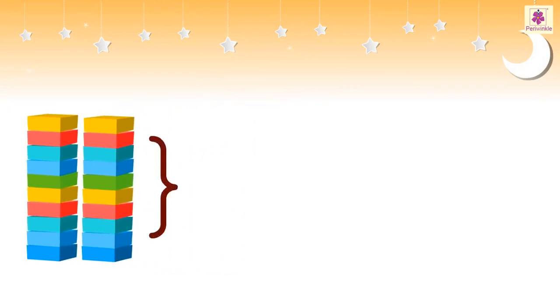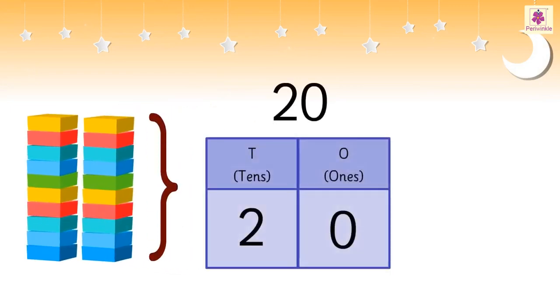Two tens together make 20. We call this 20 ones or 20 units or two tens and zero ones.